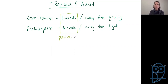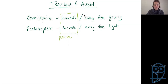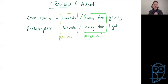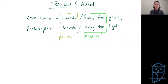Movement towards is called a positive tropism. So positive gravitropism is movement towards gravity, and positive phototropism is a bend towards light. Away from is the opposite of towards, and the opposite of positive is negative. A negative gravitropism means growing away from gravity — so upwards growth is negative gravitropism because it's away from gravity. A negative phototropism is away from light, so growing down into the soil. Generally, the aerial parts of our plant show negative gravitropism and positive phototropism.